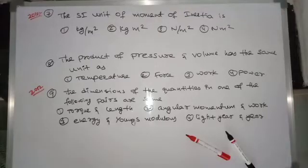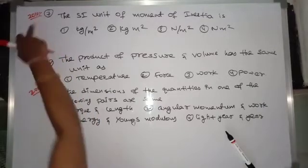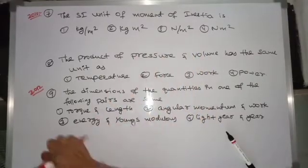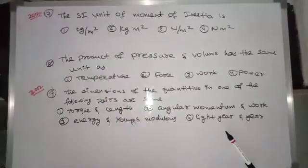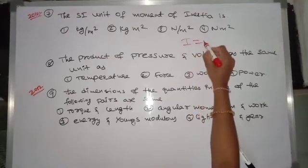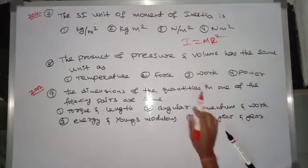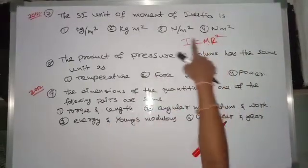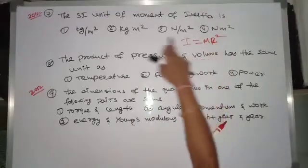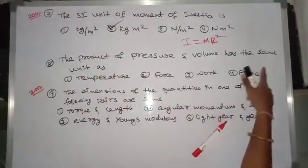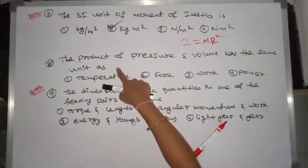Hi, welcome to CAP Quantum Academy for Physics. This is a question from 2010. The question asks: what are the units of moment of inertia? Moment of inertia I is equal to mr², where m is the mass and r is the distance. m is measured in kg and r is measured in meters, so the answer is kg·m².